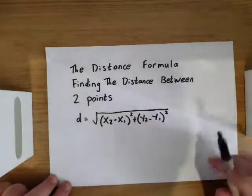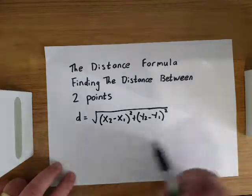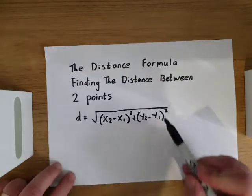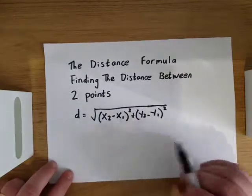What we're going to do today is have a look at the distance formula, and this entails finding the distance between two points using the formula d equals the square root of x2 minus x1 all squared plus y2 minus y1 all squared.